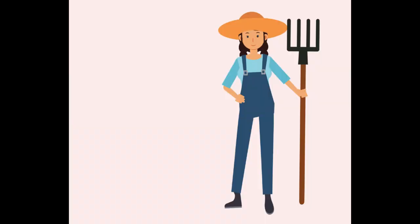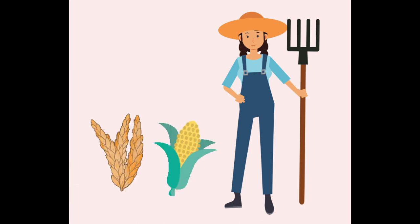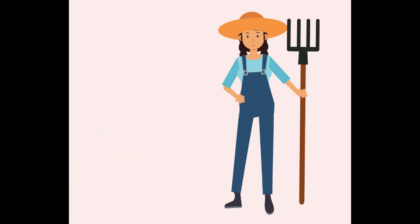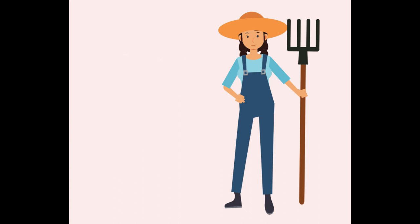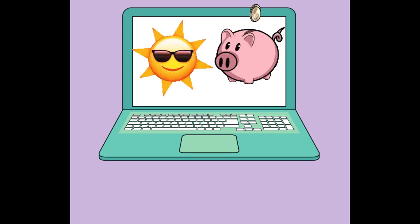In our first scenario, we have our main character, Daisy. Daisy is a farmer who has both livestock and multiple fields that produce crops every year. Daisy is a relatively new farmer to the business and wants to be safe when she is online. One day, Daisy gets an email from her bank, Sunnyside Banking.